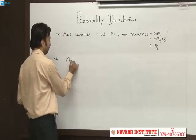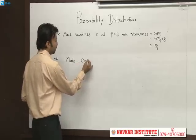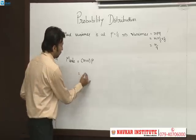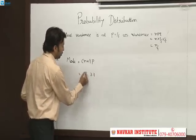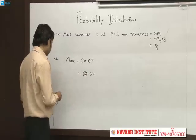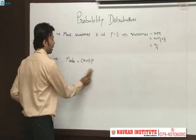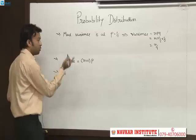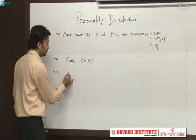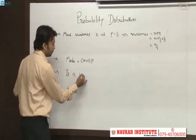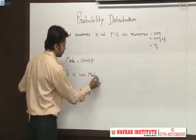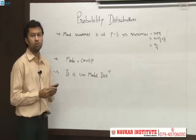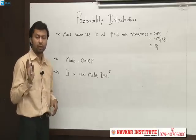The mode of binomial distribution is given by the integer part of (N+1)·P. For example, if (N+1)·P = 5.33, we take only the integer part, which is 5. The binomial distribution is unimodal, meaning the number of modes is always one.